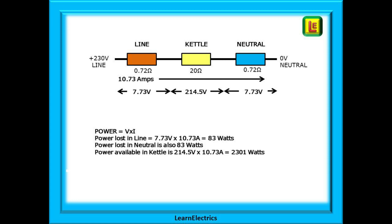Calculating power in each part: the line conductor has 7.73 volts times 10.73 amps = 83 watts; the neutral also loses 83 watts — meaning 166 watts of energy is being lost into the cables in the wall every time the kettle is switched on. This is lost energy the customer is paying for. The kettle receives 214.5 volts times 10.73 amps = just 2,301 watts. Our 2.7-kilowatt kettle is now functioning as only a 2.3-kilowatt kettle — all because of a long, thin cable installed without proper calculation.